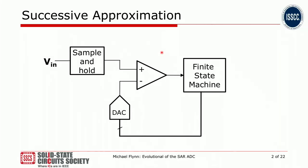I'm going to begin with this picture of a simple SAR ADC. On the left, you can see the analog input comes into a sample and hold block. There's a DAC down here, and that DAC compares against a succession of values. The comparison is done with a comparator, and there's a finite state machine guiding this process. Typically these conversions happen in a binary fashion, starting with half full scale, then going on to quarter full scale, and so on.